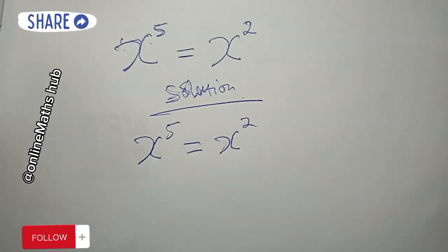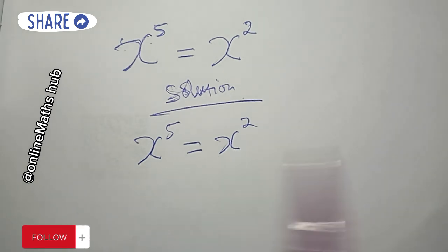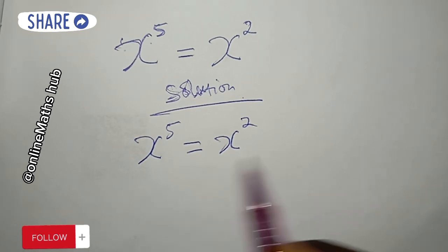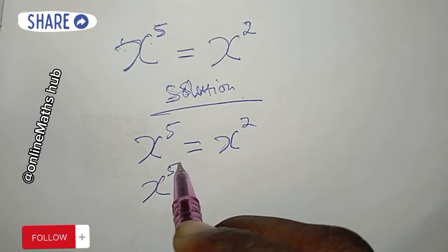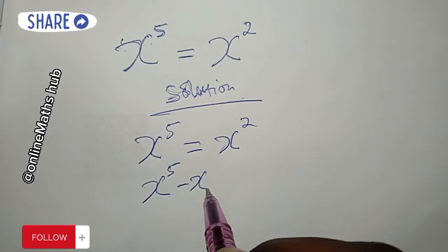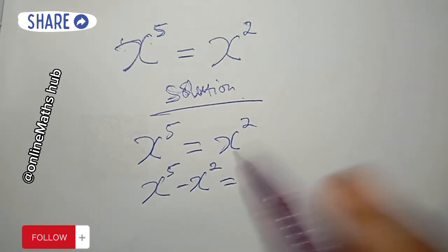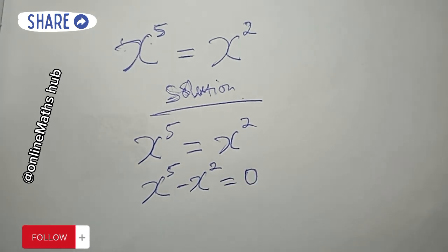What I'm going to do first is bring x power 2 to the left hand side. If I do that, I have x power 5 minus x power 2, and the right hand side becomes equal to zero.